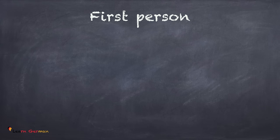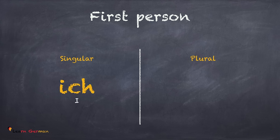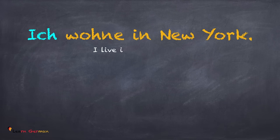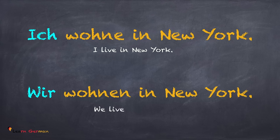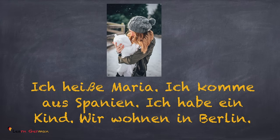Now let's start with the personal pronouns of the first person. As mentioned, there is a singular and a plural form. Ich is singular and Wir is plural. Now let's use these in a sentence. Ich wohne in New York. Wir wohnen in New York. Let's see another example — try to concentrate on the usage of the pronouns Ich and Wir.